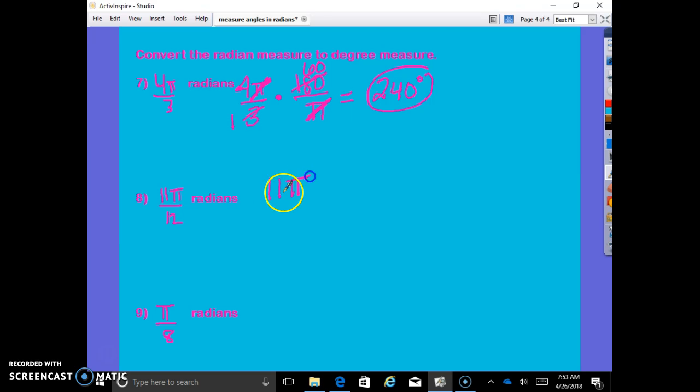11 pi over 12 times—we're getting into degrees, so degrees go on top. Our pi's cancel out. Half of that is 6. Half of 180 is 90. Half of that is 3. Half of 90 is 45. 3 goes into 3 once and 3 goes in here 15 times. 15 times 11. 165 degrees.